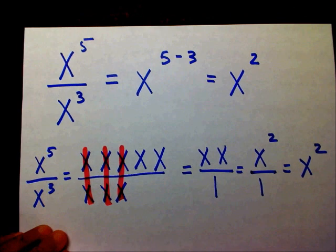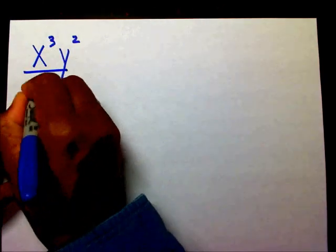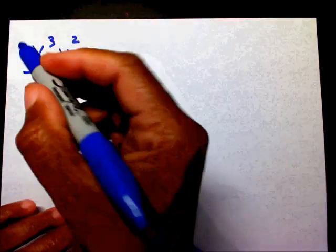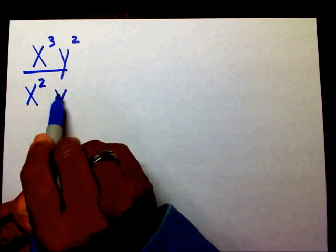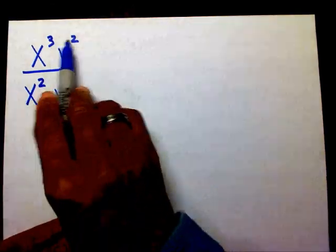Let's try another one. What if I had x to the third, y to the second, over x to the second, y? First of all, whenever you have a base without an exponent, that exponent is 1. So I'm going to put a little 1 right there to make sure every base has an exponent.